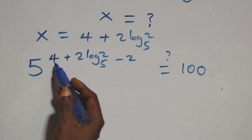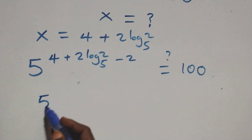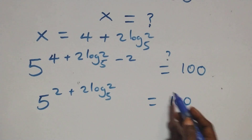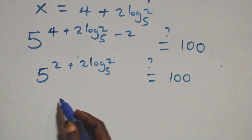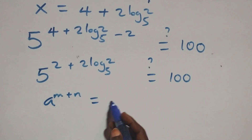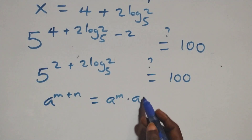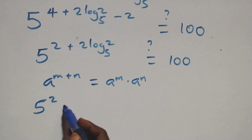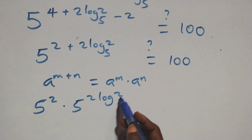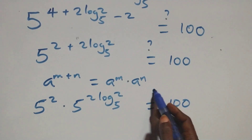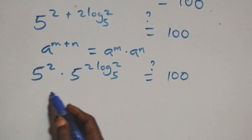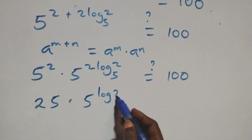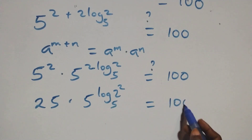From here we have 4 minus 2, that's 2. This becomes 5 raised to power 2 plus 2 log 2 base 5 equals 100. This follows the law of indices: when we have a raised to power n plus n, this is the same as a raised to power n times a raised to power n. So we have 5 squared times 5 raised to power 2 log 2 base 5 equals 100. We bring the 2 up using the power rule: 25 times 5 raised to power log 2 squared base 5, that is log 4 base 5, equals 100.